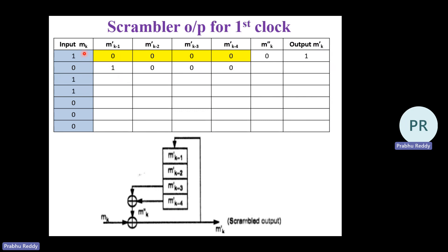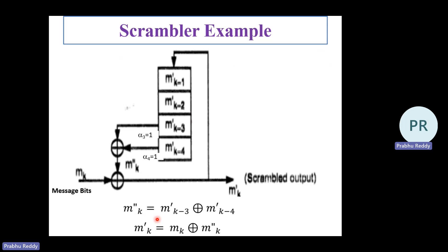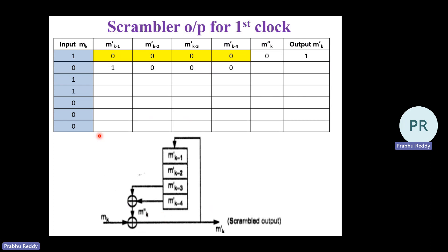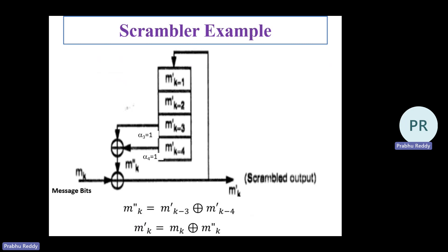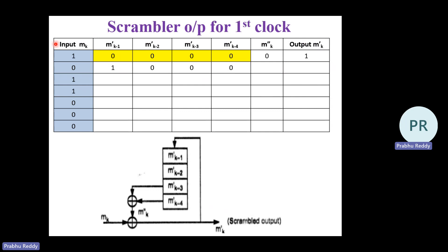For a scrambler numerical, they will give you either the diagram or the equation, along with a set of input bits. For example, seven input bits are given, and you are expected to produce the corresponding seven scrambled output bits, mk-dash. Our task is to find the scrambled seven bits for the given input sequence.